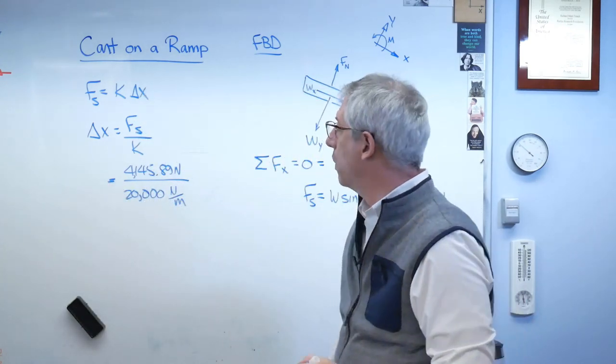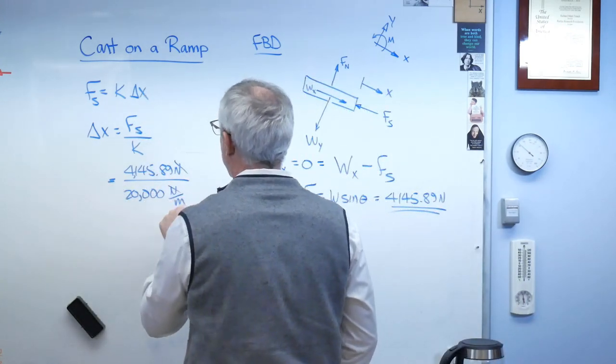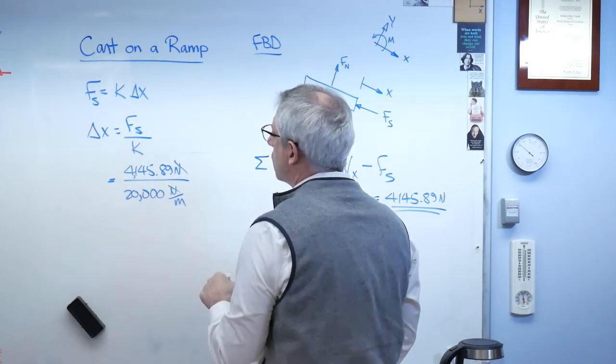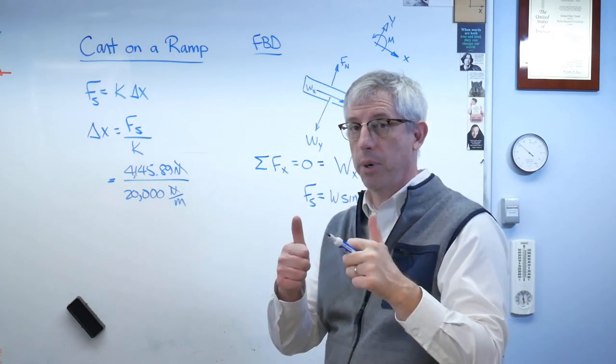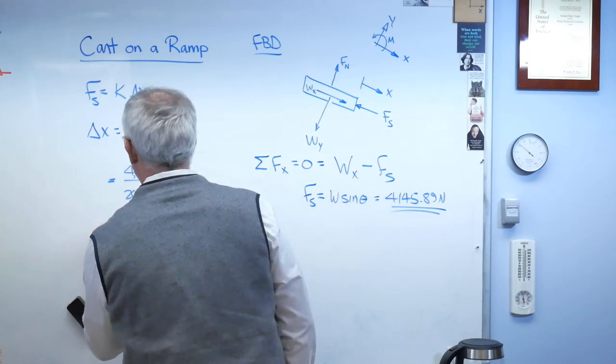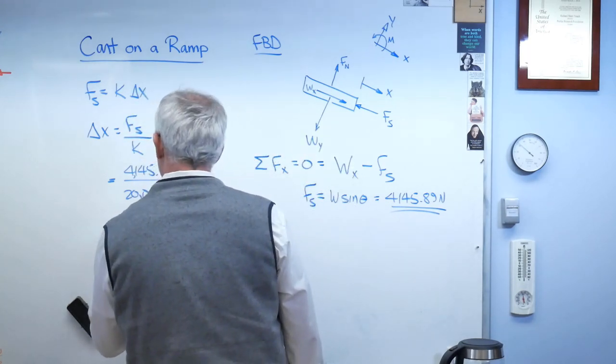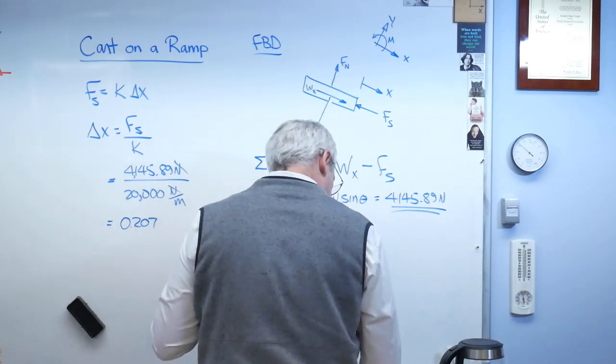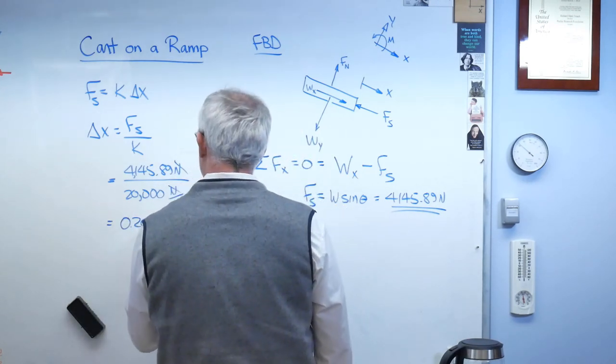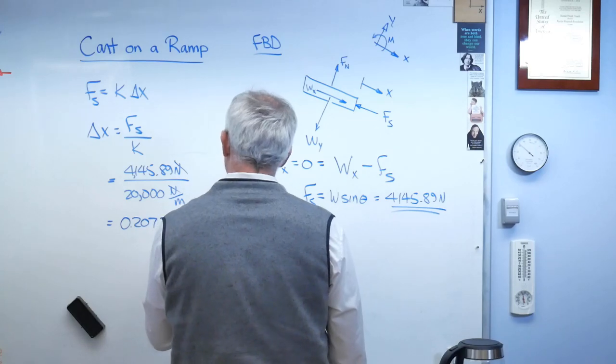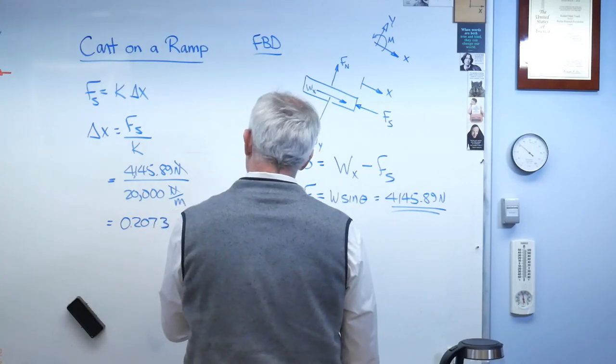Do the units work out? The newtons cancel out. That means whatever answer I get is going to be in meters. Perfect. So it works out to .2073. And that equals 207.3 millimeters.